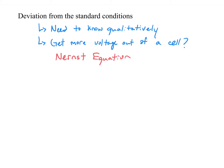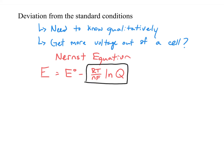The Nernst equation reads: the non-standard voltage equals the standard voltage minus RT over NF times the natural log of Q. You don't necessarily have to use this formula quantitatively, but you can use it to determine how to improve the performance of a voltaic cell. Focus on the last term: RT over NF times natural log of Q. Remember, Q is the reaction quotient — a snapshot in time, calculated the same as the equilibrium constant: concentration of products over concentration of reactants, but not at equilibrium.